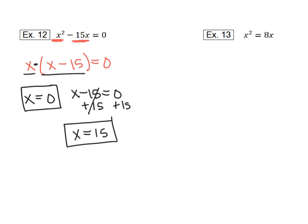This last one over here, look to see if it's set equal to 0, and you can see that it's not. We can fix that, though. So we want to get this 8x to the other side, so we'll go ahead and subtract 8x from both sides.